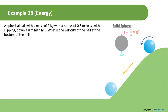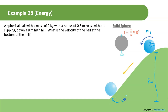Example: a spherical ball with mass 2 kilograms and radius 0.3 meters rolls without slipping down an 8-meter-high hill. What is the velocity at the very bottom? We use conservation of mechanical energy: energy at the top equals energy at the bottom.